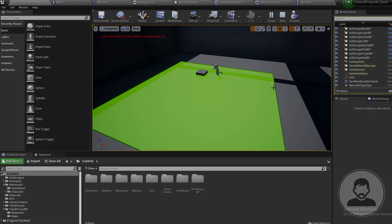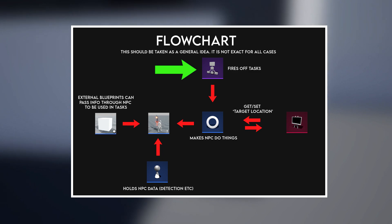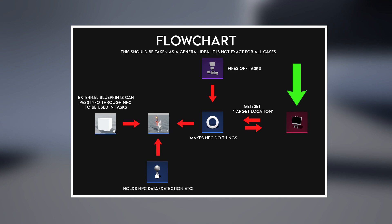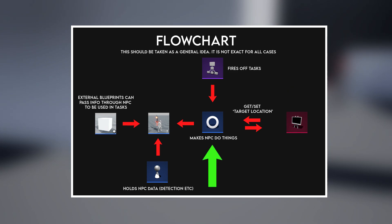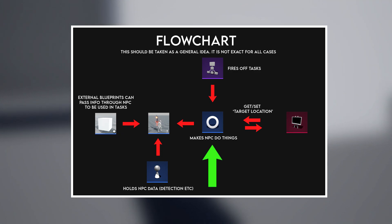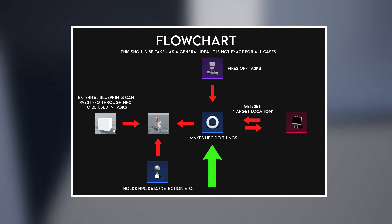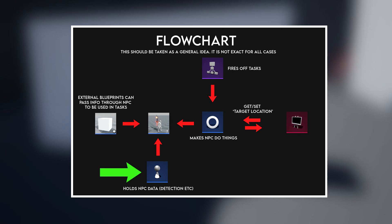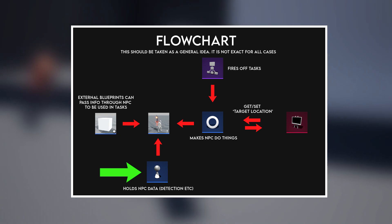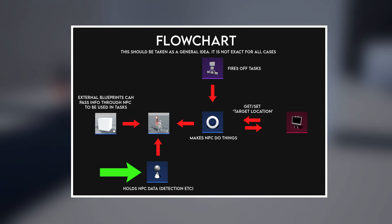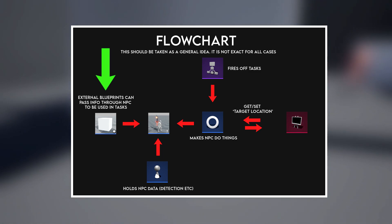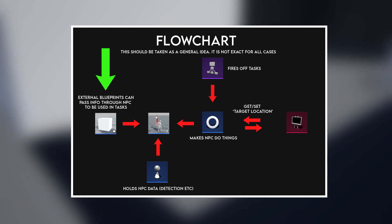Here's a quick rundown: a Behavior Tree holds tasks and fires off different ones depending on certain variables. A Blackboard holds variables for the Behavior Tree — here we used it to create a Target Location variable. Tasks fire from the Behavior Tree and make the NPC do things, communicating between the Blackboard, NPC, and AI Controller. We had two tasks: one set the target location, the other moved the NPC there. We also used a spline to create a constantly moving location value that was passed through the NPC to the task.